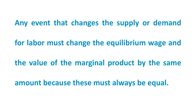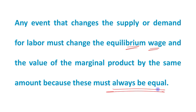This gives us an important lesson: any event that changes the supply or demand for labor must change the equilibrium wage and the value of marginal product by the same amount, because these must always be equal. If any event changes the supply or demand for labor, the equilibrium wage and VMPL will change by the same amount, because each firm follows the profit maximization condition: VMPL is equal to the wage rate.